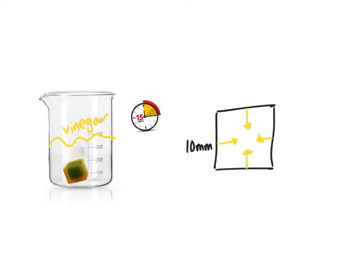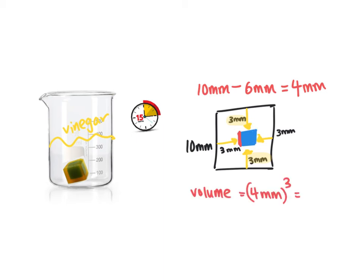So the leftover part will be 10 millimeters minus 6. That's going to give me 4 millimeters. So the volume of this blue part is 4 millimeters times 4 millimeters times 4 millimeters.